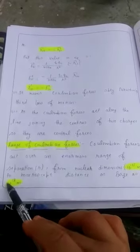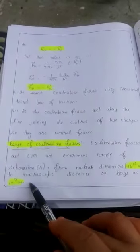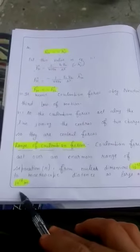What is the range of Coulomb's force? Where do they start and how far can they go? They start from 10 to the power minus 15, that is the size of nucleus, and go up to 10 to the power 18 meter. This is the range of Coulomb's force.